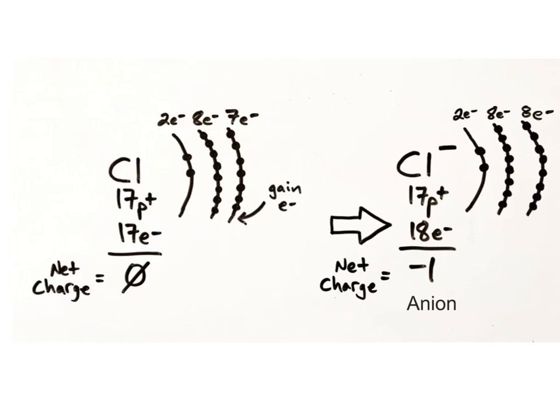Negatively charged ions are called anions. You can remember this term using the phrase "a negative ion." You can also think of the prefix "anti," which means against something — you're negative to something.